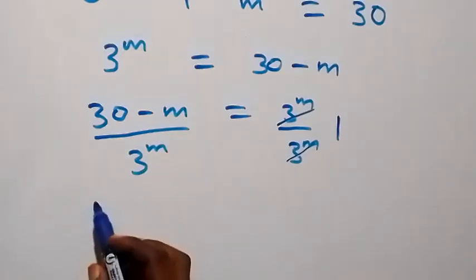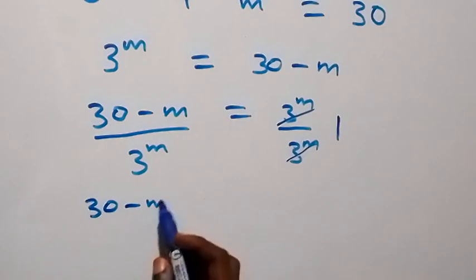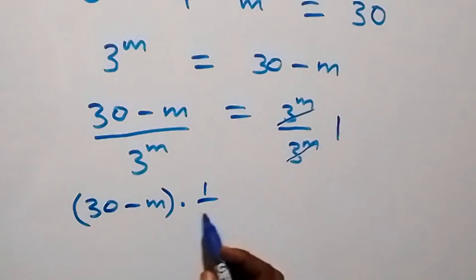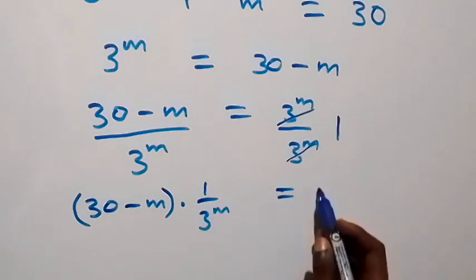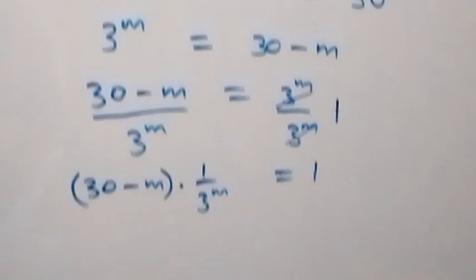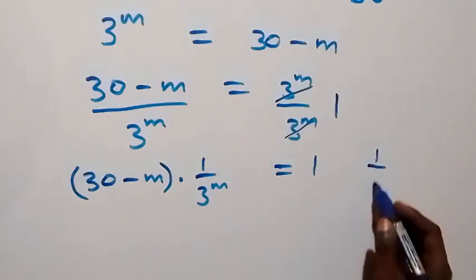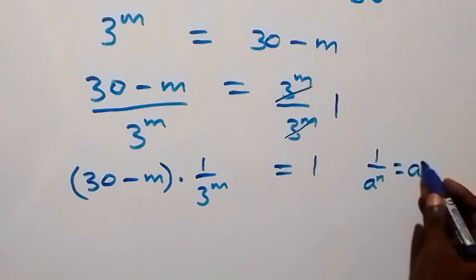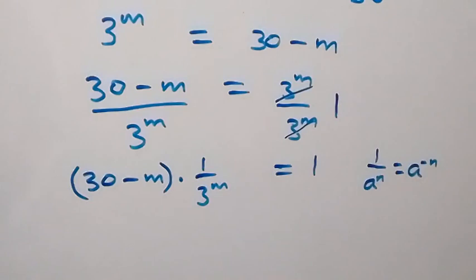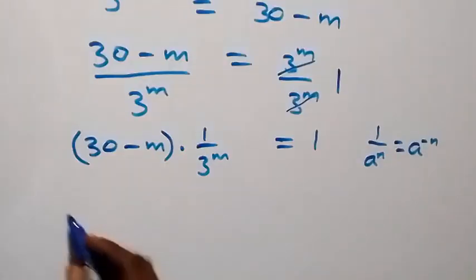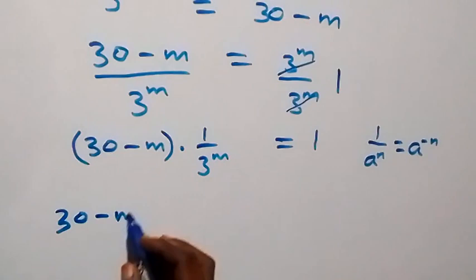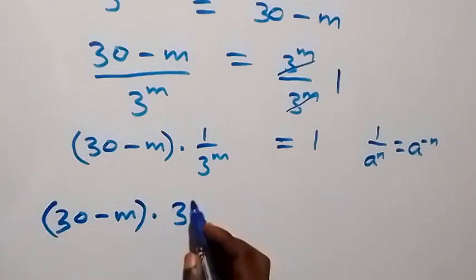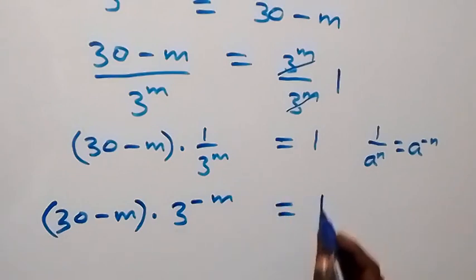What we have here can be written as 30 minus m multiplied by 1 over 3 raised to power m, and that equals 1. And 1 over 3 raised to power m can be written as 3 raised to power negative m. So we have 30 minus m times 3 raised to power negative m equals 1.